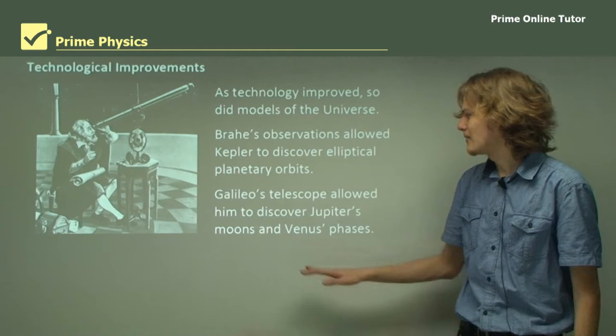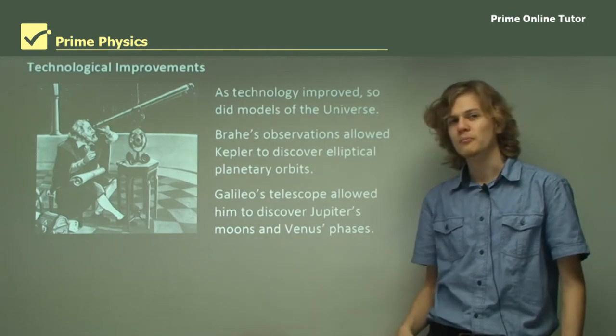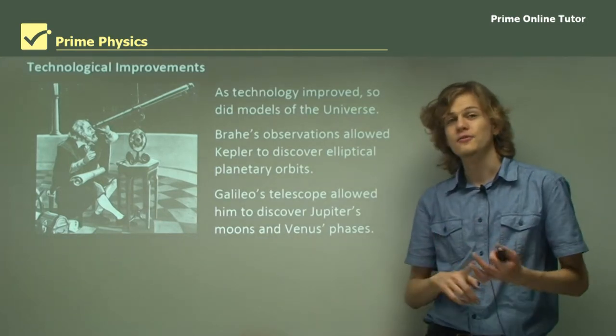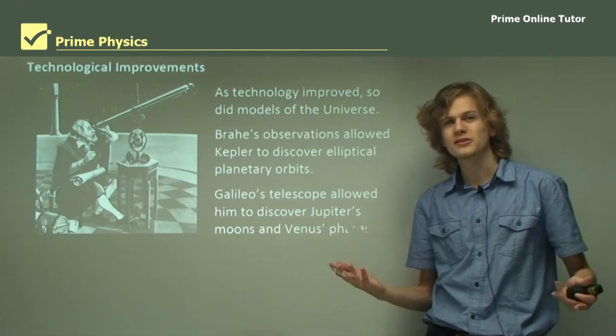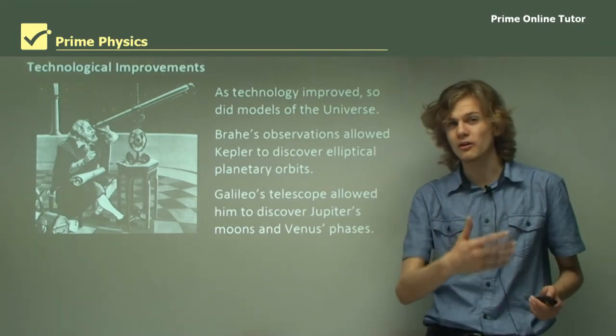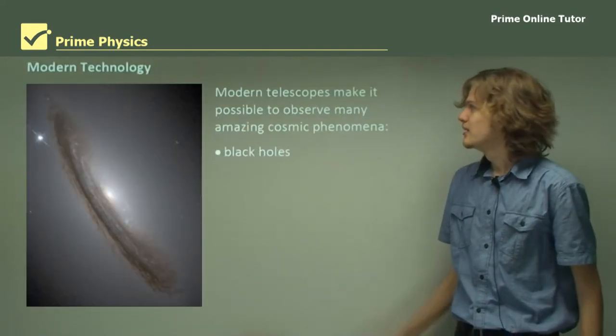And as I mentioned before, Galileo's telescope allowed him to measure things like Jupiter's moons and Venus's phases, which were not previously known simply because no one could see them well enough.